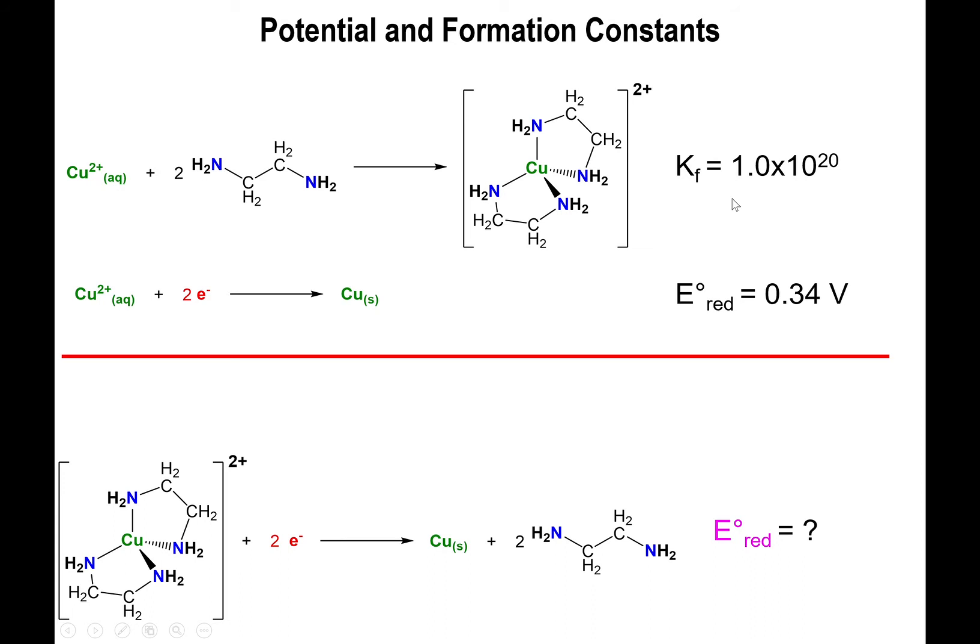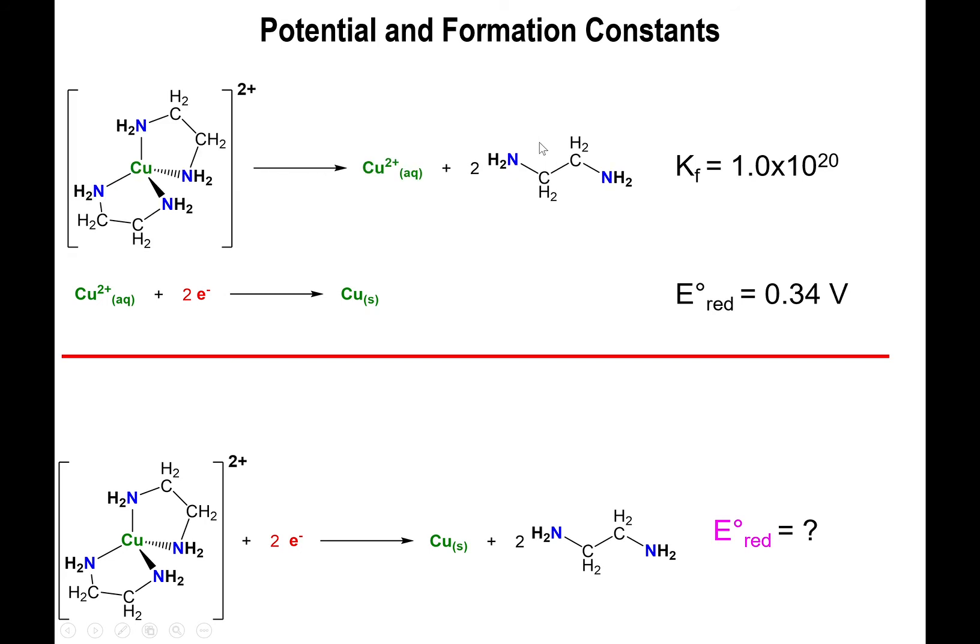Now, the idea right here is that you want to manipulate the equation so that you have the overall equation, and the complex is not on the product side, it's actually on the reactant side. So this tells you that the first equation we have here needs to be flipped on itself, and that means that the Kf value will need to be raised to the negative 1 power.